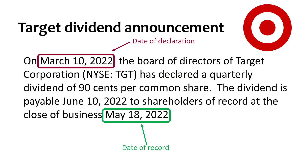This example is from real life. Target Corporation declared a dividend of $0.90 on March 10, 2022, to be paid on June 20, 2022, to shareholders of record as of the close of business on May 18, 2022.